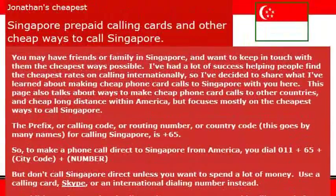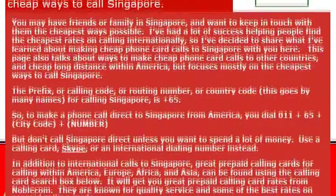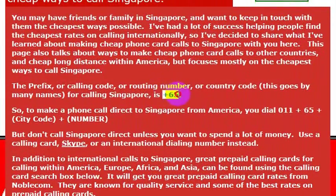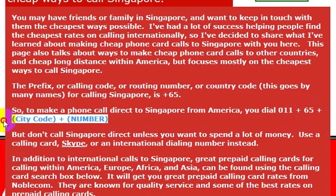That having been said, when we decide to go back or even to reach our friends there, what we need to do is give them a phone call using the dialing code if we want to call them using just a straight landline. The international dialing code to call from the United States is 011, and then you need to know the country code for Singapore, which is 65, then you dial the phone number of whoever you're trying to reach.